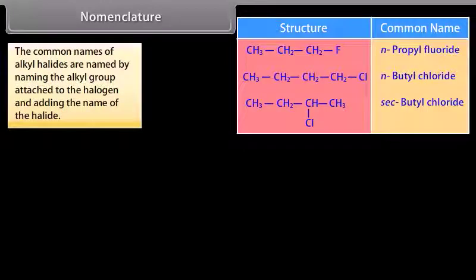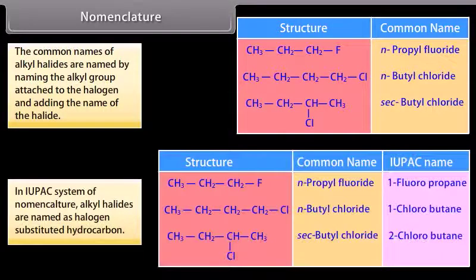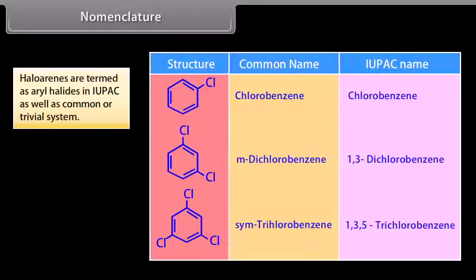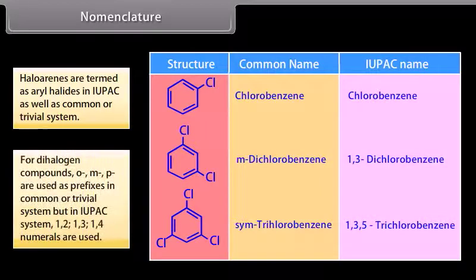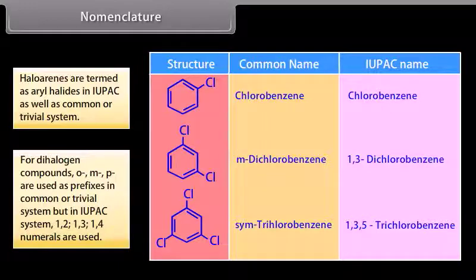The common names of alkyl halides are formed by naming the alkyl group attached to the halogen and adding the name of the halide. In the IUPAC system of nomenclature, alkyl halides are named as halogen-substituted hydrocarbons. Haloarenes are termed as aryl halides in both IUPAC and common systems. For dihalogen compounds, ortho, meta, and para are used as prefixes in the common system, but in the IUPAC system, 1,2-, 1,3-, and 1,4- numerals are used.